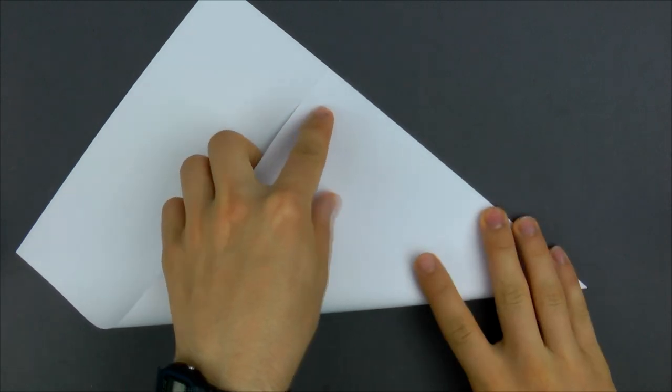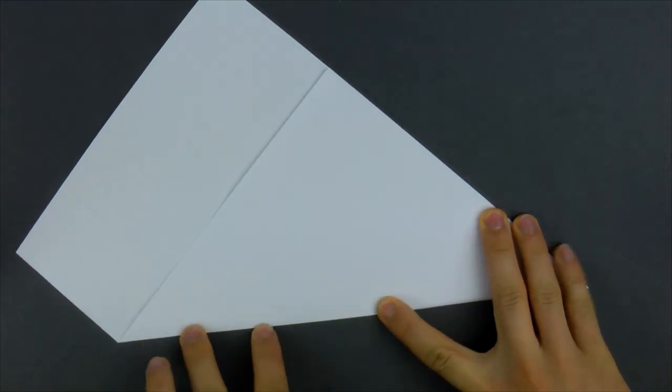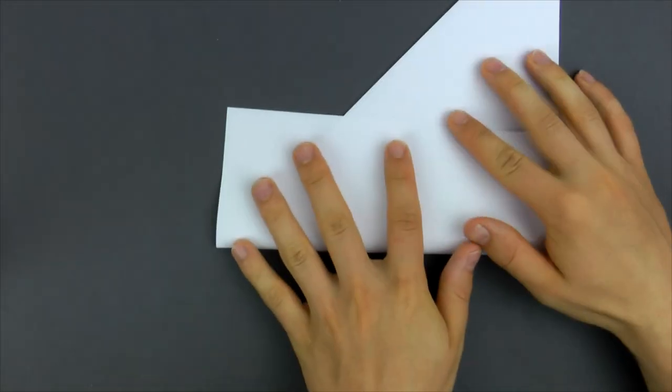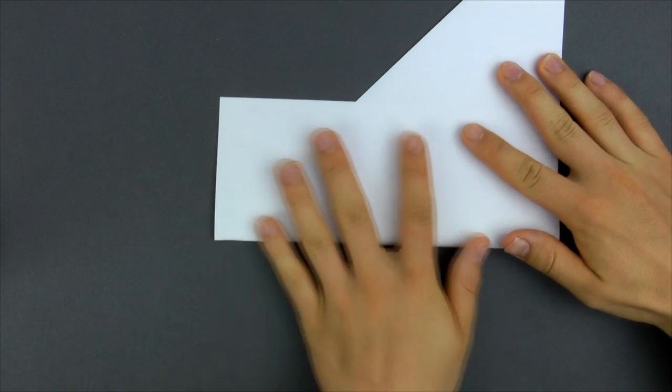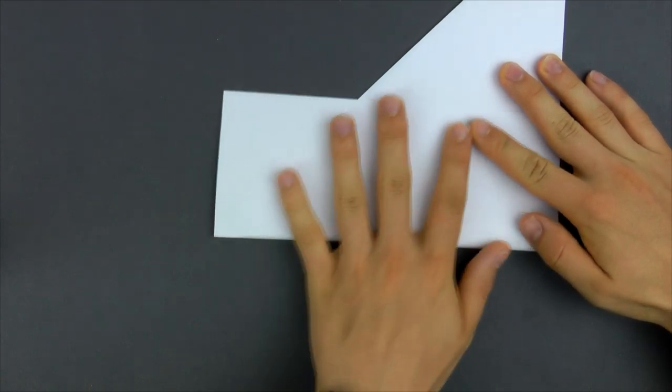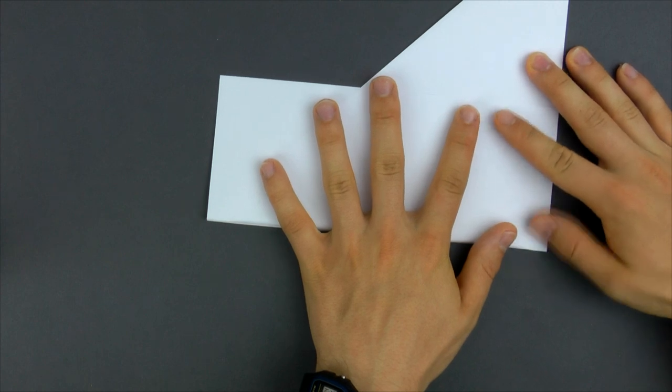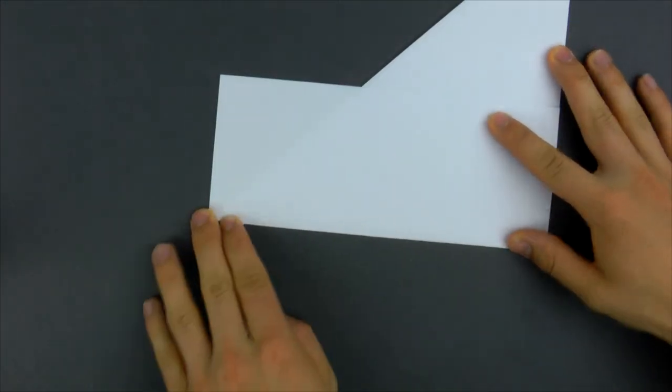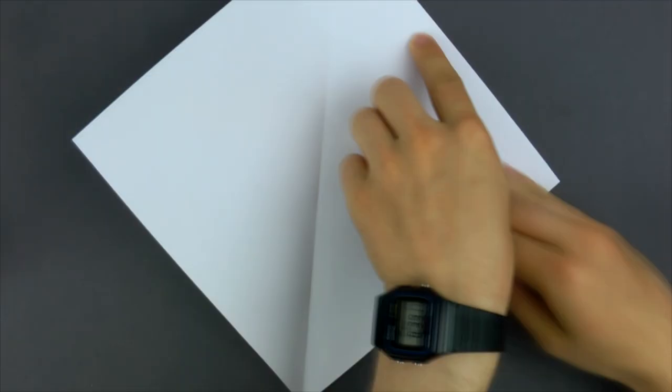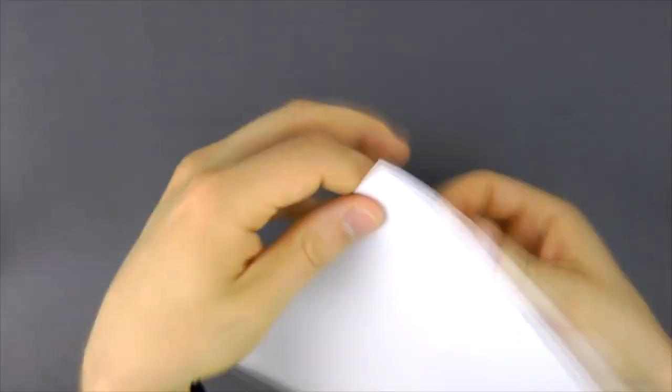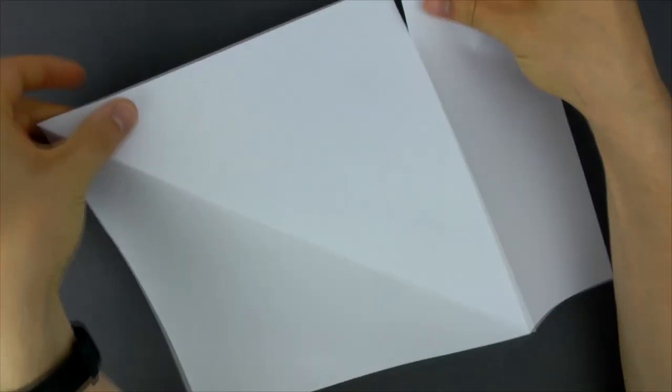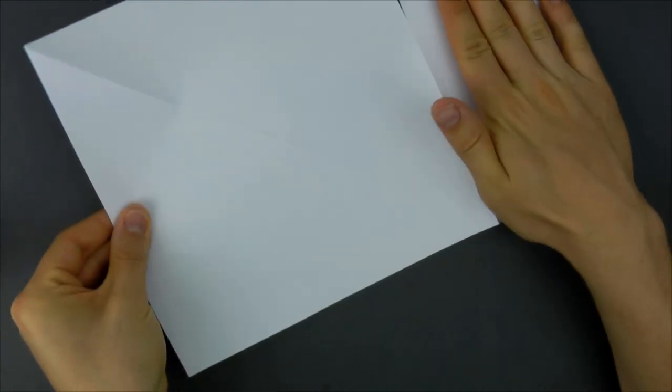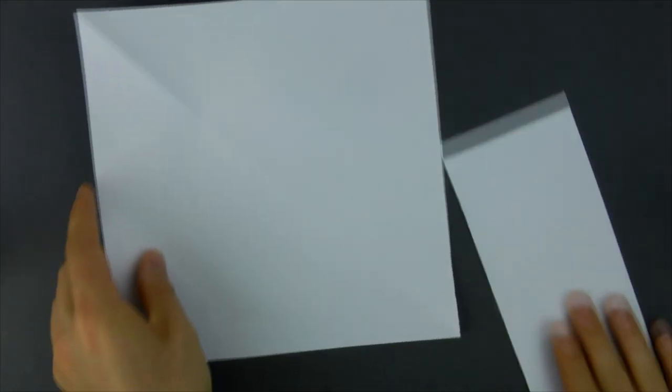For the first step, fold the sheet diagonally. If you have printer paper like I do in the video, fold the leftover part backwards and make a nice, sharp, strong crease so we can later remove that paper strip. Fold it nice and sharp both ways so it will be easier to remove. Then just pull the paper apart gently like this, and now you have a square.